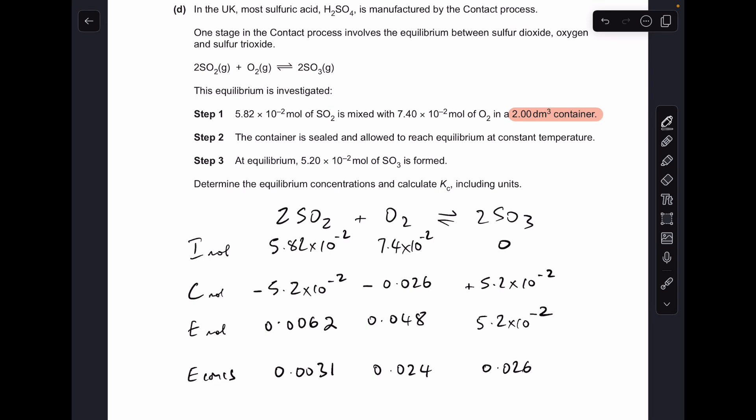And then the final thing we need to do with the numbers is just to turn the moles into concentrations. Remember Kc is a measure of the equilibrium concentrations of the species in the system, and we do that by dividing the moles by the volume, and you can see I've highlighted the 2 dm cubed container.